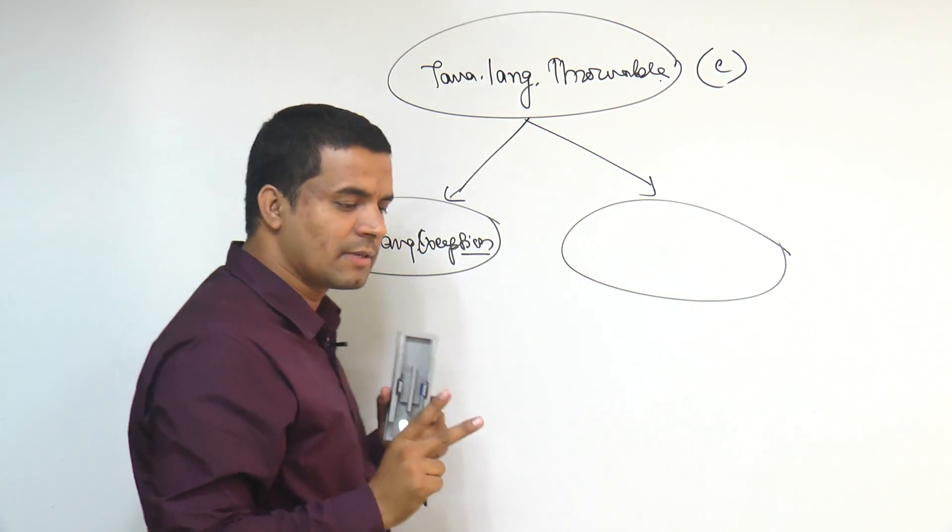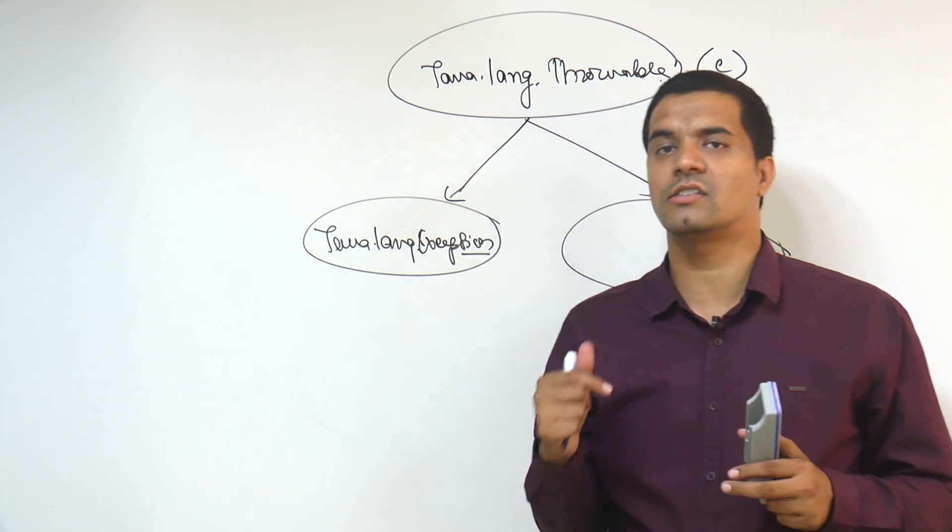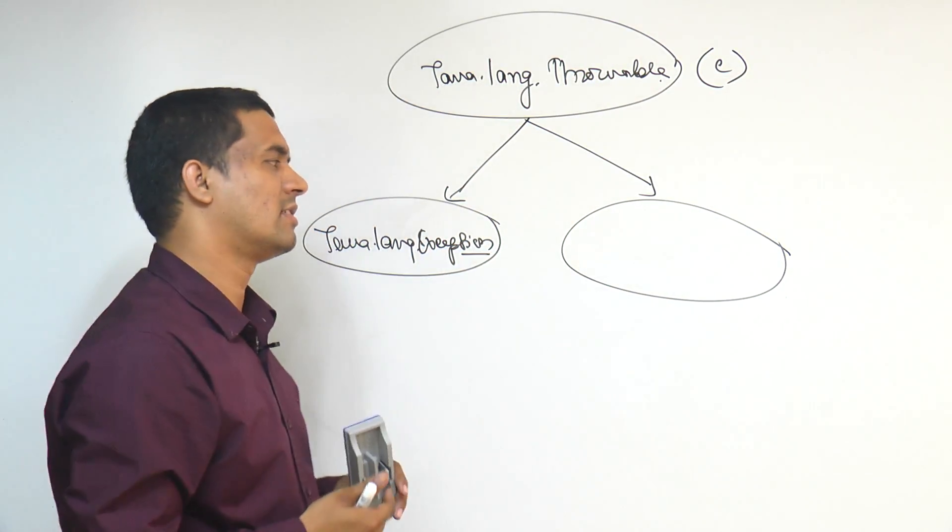Exception, any type of exception if it is coming. Basically that exception has been defined in a type of class, it is in a separate class. This is one class Exception.